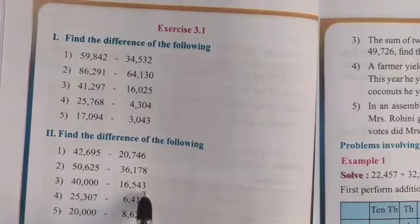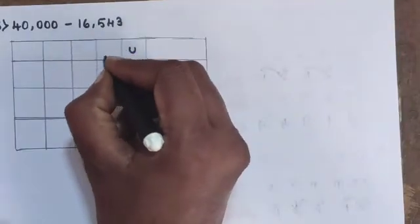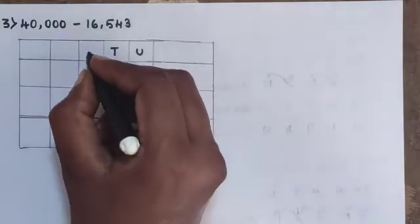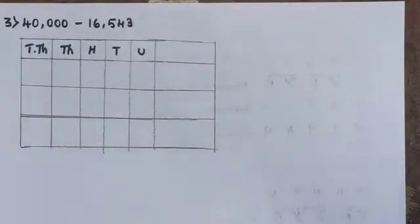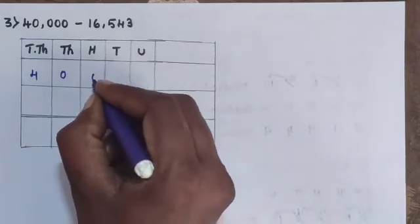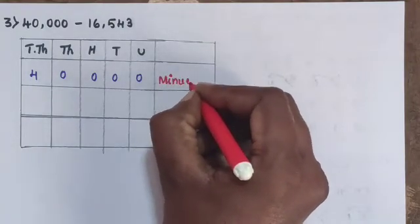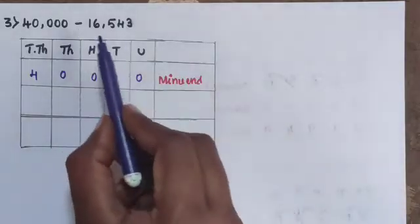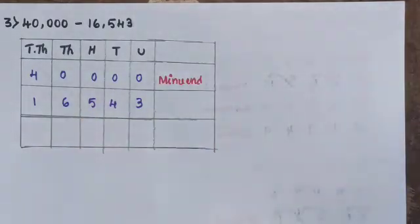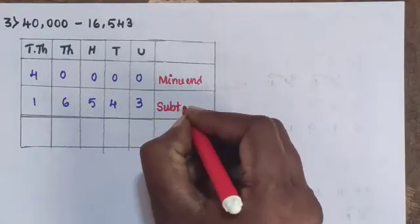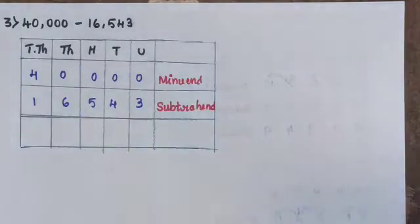Next, question number 3: 40,000 minus 16,543. Arrange the digits in place value columns — units, tens, hundreds, thousands, ten-thousands. 40,000 is the minuend and 16,543 is the subtrahend. Find the difference of these two numbers.